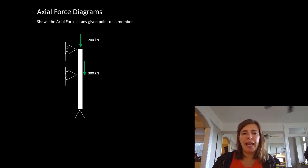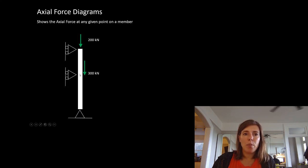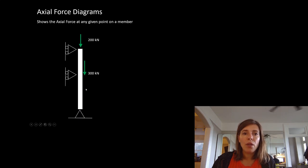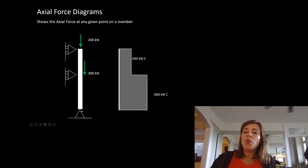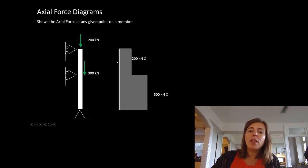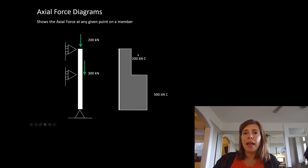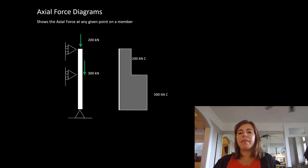Watch where it comes in really handy. If you look at this, 200 kilonewtons is applied here, and nothing else happens until this point, where it's also seeing 300 kilonewtons. So in this zone of the column, it's actually experiencing 500 kilonewtons. Our reaction would be showing 500 kilonewtons at the base. If we draw our axial force diagram, all of a sudden it becomes a handy picture — we can see at a glance that we've got 200 kilonewtons here and 500 kilonewtons in the lower part of the column.